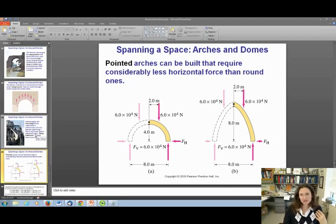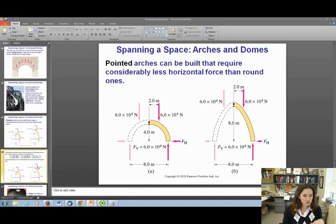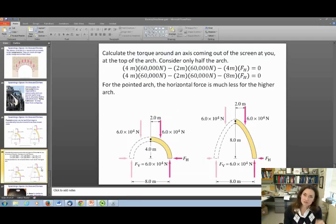They realized relatively quickly, just by trial and error, that they could support more weight with a pointed arch than with a round arch. The reason for that is some of the statics you learned in this chapter. What we're going to do is calculate the torque coming out of an axis at the screen at you. You're going to calculate the torque about an axis coming out of the screen at you at the top of the arch. These little black dots at the top of the arch correspond to looking down on that axle. We're only going to consider half the arch.